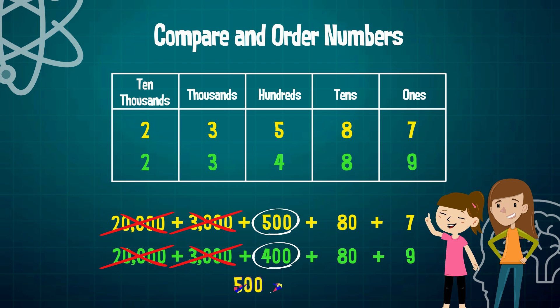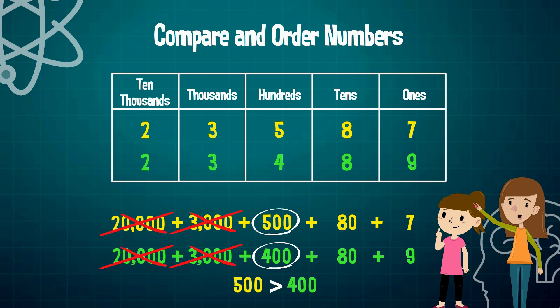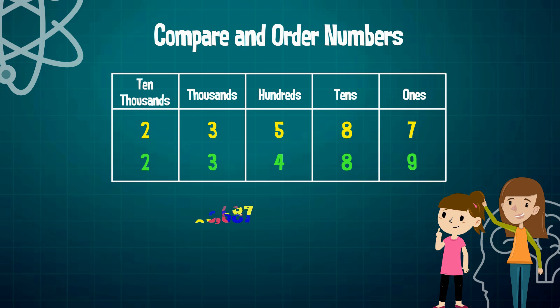That 500 is greater than 400. Awesome. So it looks like we found our greater number. Since 500 is greater than 400, we know that 23,587 has to be greater than 23,489.